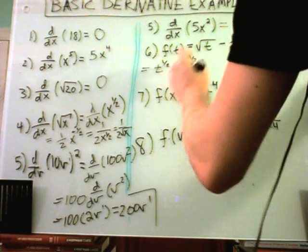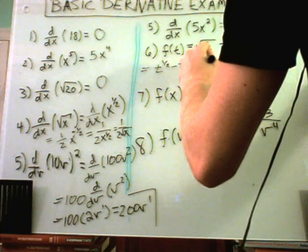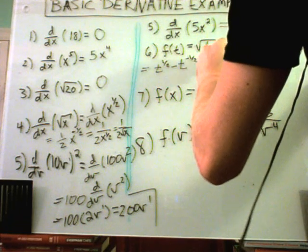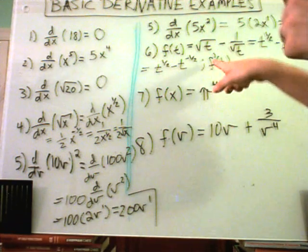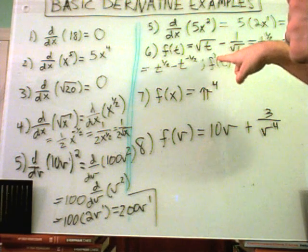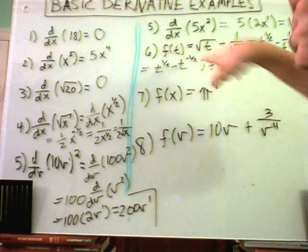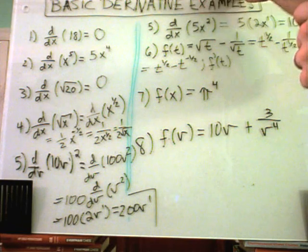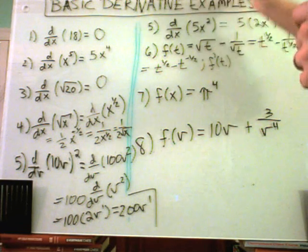So if I take the derivative of this, f prime of t - and again this notation, the little apostrophe is referred to as a prime and it simply means you're taking the derivative of whatever you had before - so I'm taking the derivative of f of t.